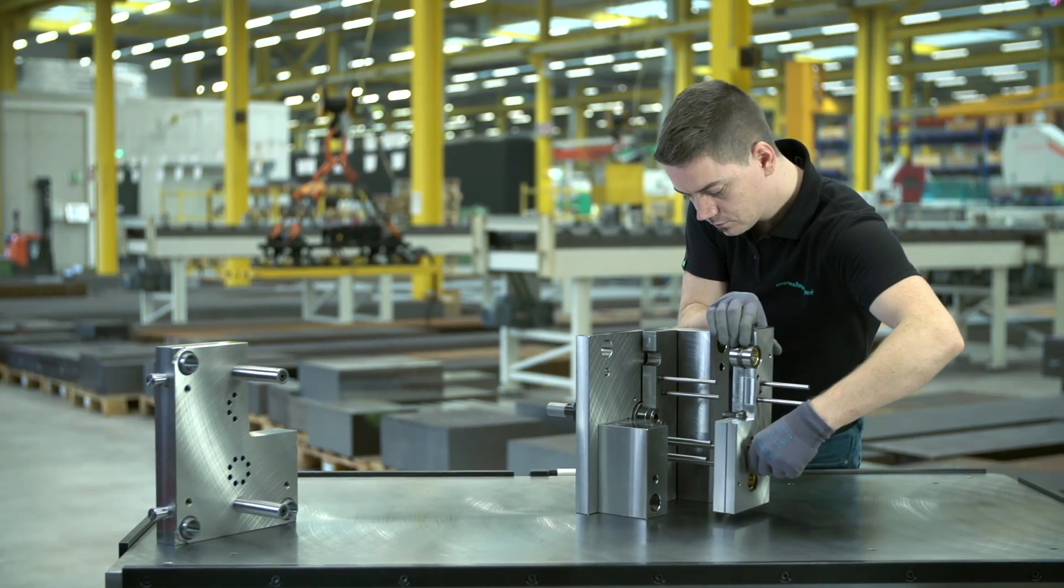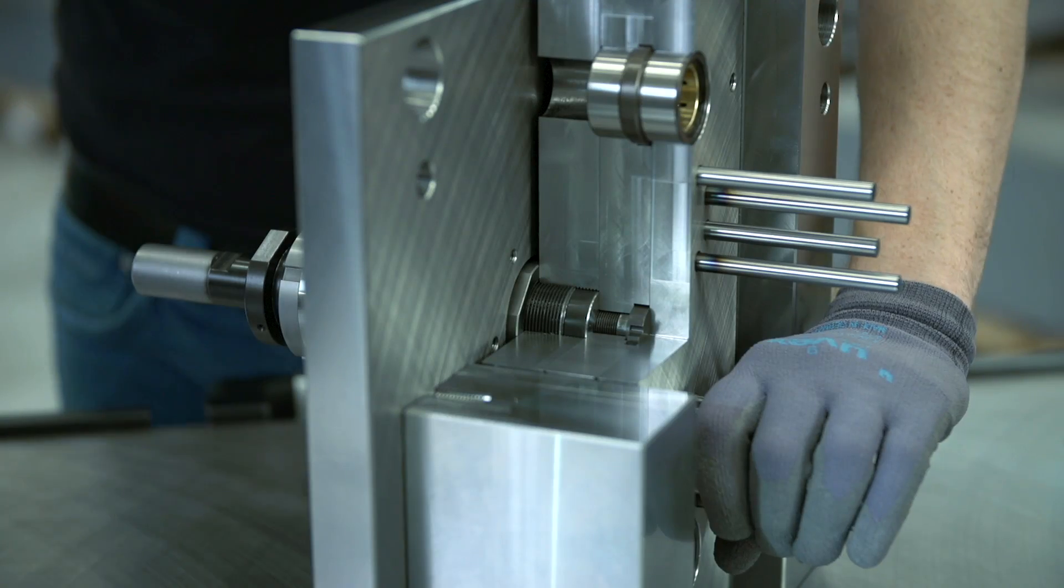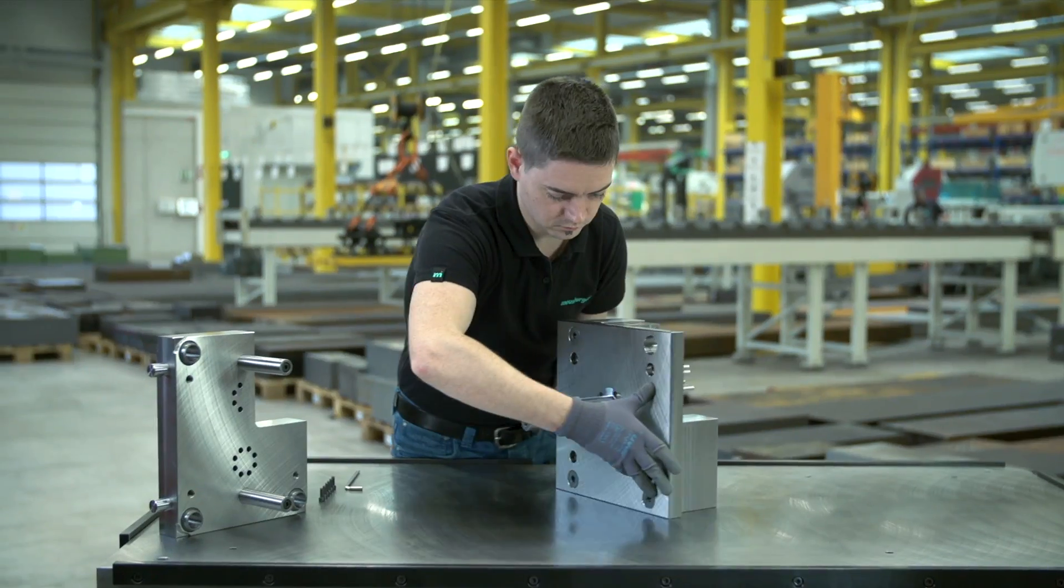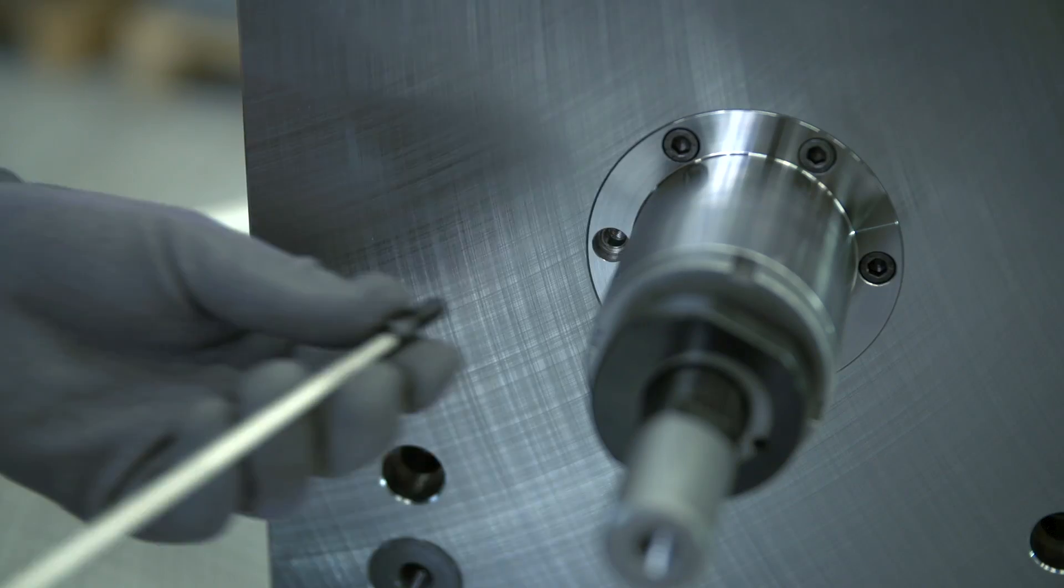In the next step, the ejector rod is screwed to the front ejector set. After the correct positioning of the fixing sleeve, this is attached to the clamp plate.